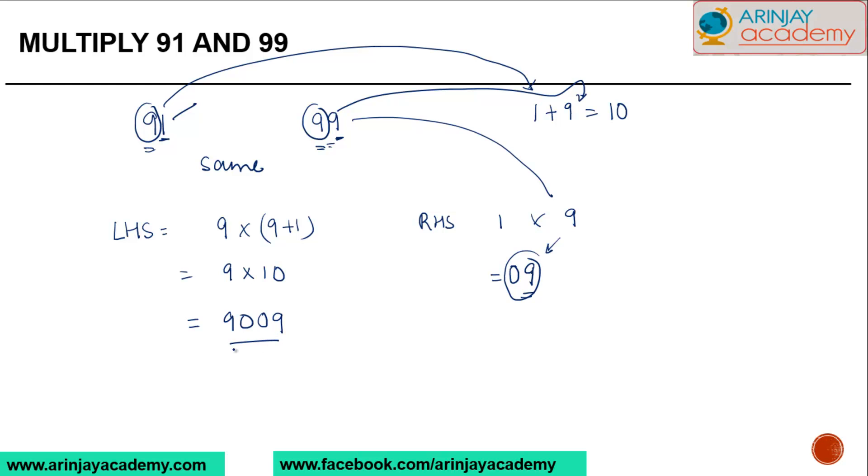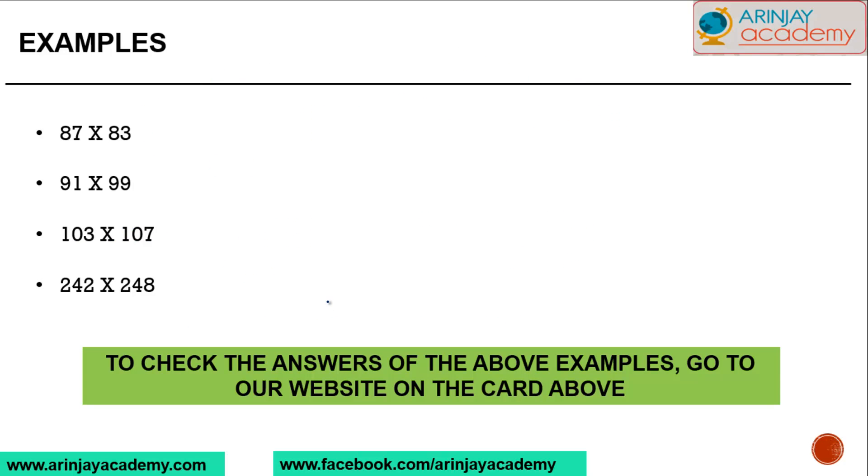And this is going to be my answer. So what I mean by this is: whenever you are multiplying the right hand side, if the digits which come in are single, I just need to prefix a 0 and take it to get the answer. I hope this concept is clear.